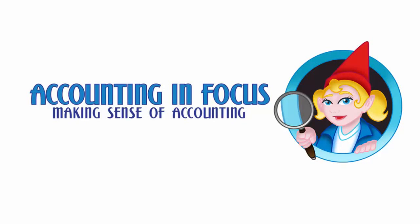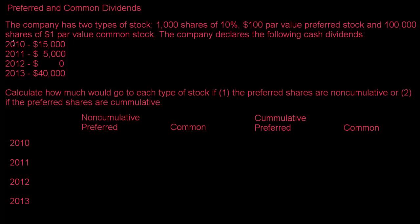Welcome to Accounting in Focus. In this video we're going to talk about allocating dividends between preferred and common shares. When doing this allocation, the thing you have to remember is that preferred shareholders, because they're preferred, get paid first.